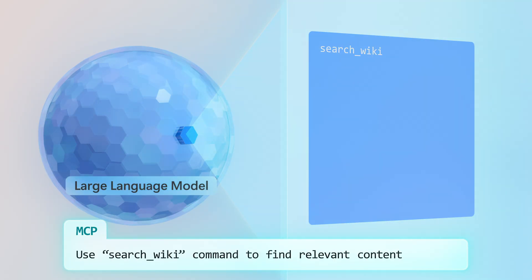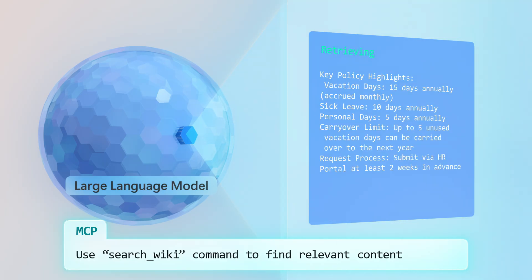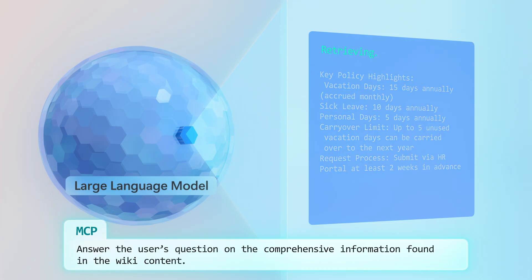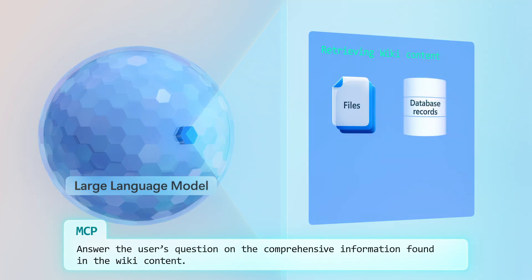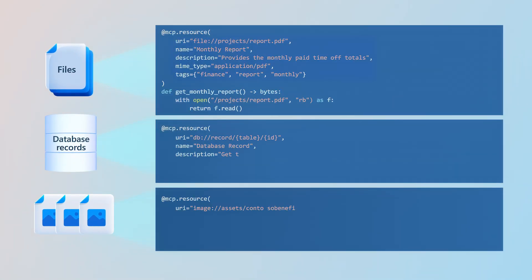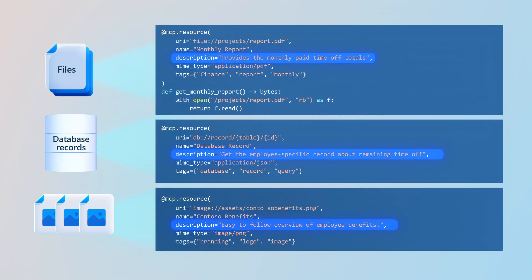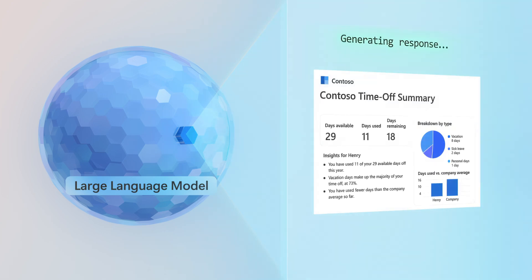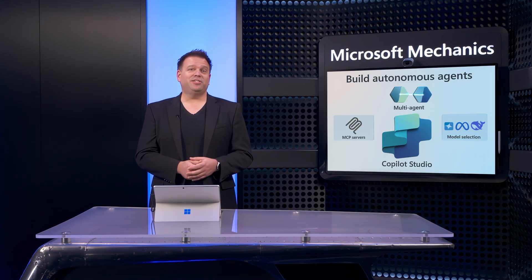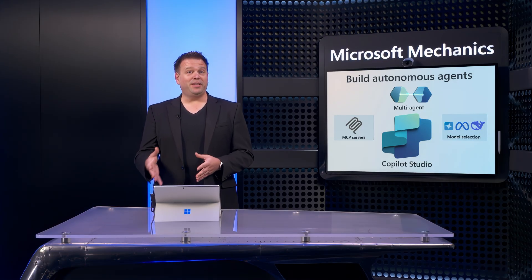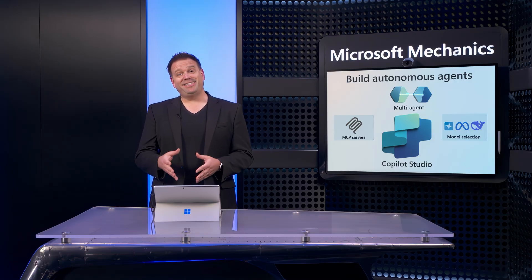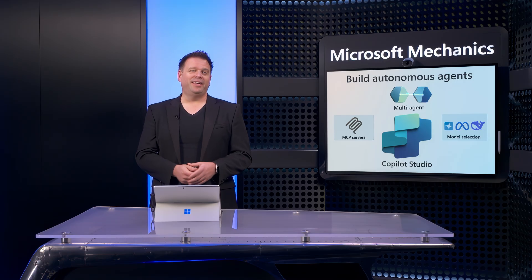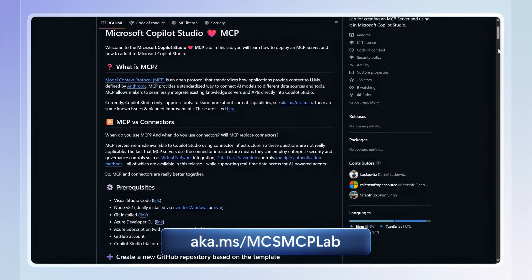MCP primarily supports read operations to look up and retrieve information, where it points to specific resources like files, database records, or images — each packaged with metadata to describe the resource and how it should be used to perform the task. This helps AI quickly find and make sense of the most relevant information in order to generate and format its response. This means using MCP, your AI agents are generally more efficient and accurate than they would be using other options. Your IT team has an incentive to build them to minimize operational costs. And if you're in IT and want to get an MCP server running, check out our lab at aka.ms/mcsmcplab.